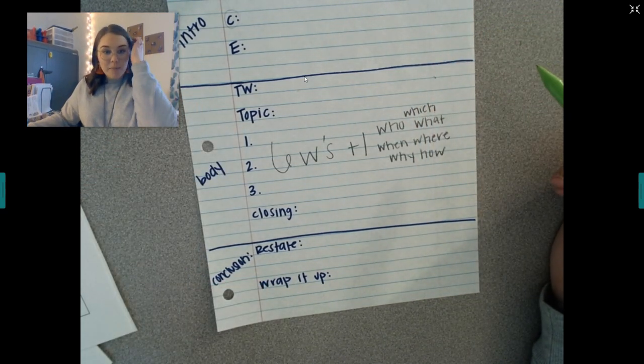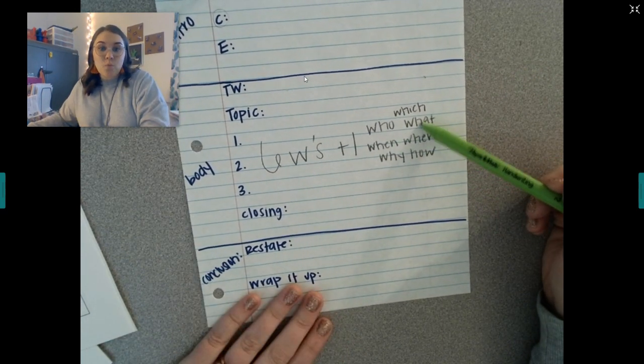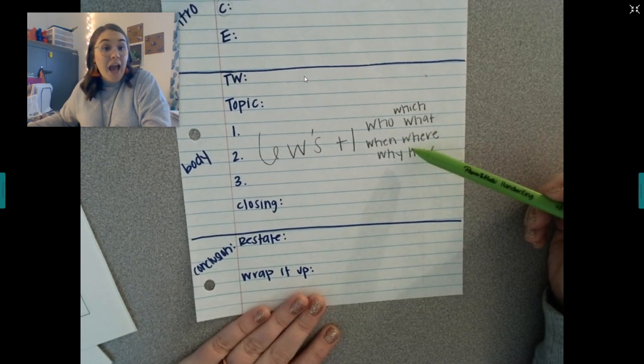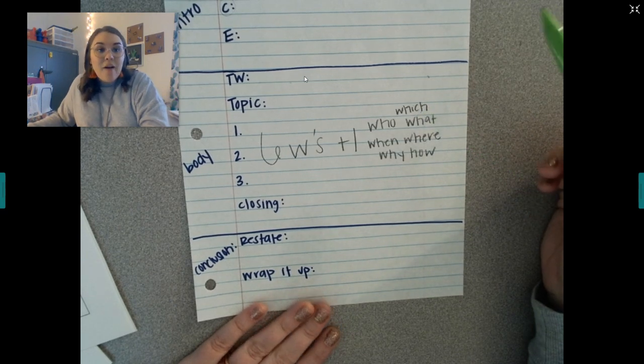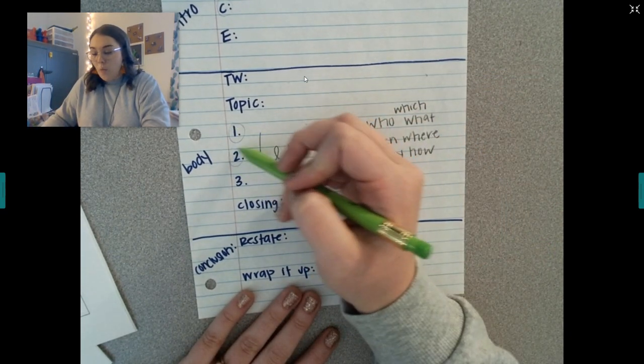So you're going to tell me who taught you this lesson. What is the lesson? When did you learn the lesson? Where were you? Why did you learn the lesson? How did you learn the lesson? Which lesson did you learn? Think about all of those things when you're writing your one, two, three. And remember, each of these should be one sentence.